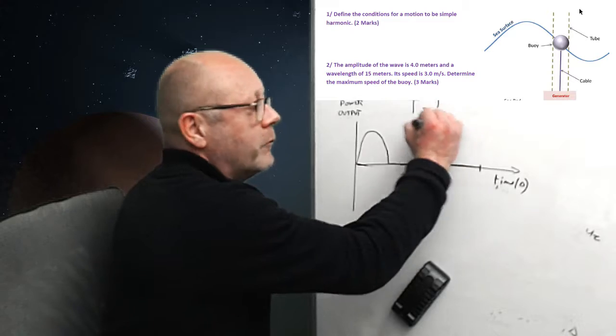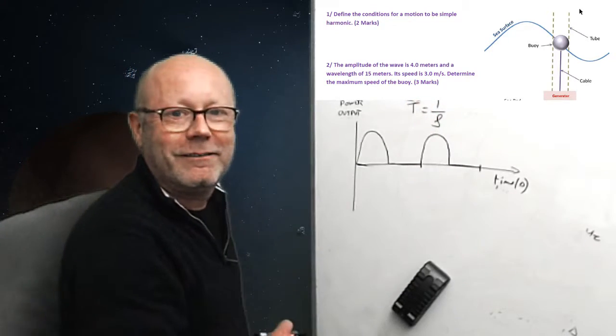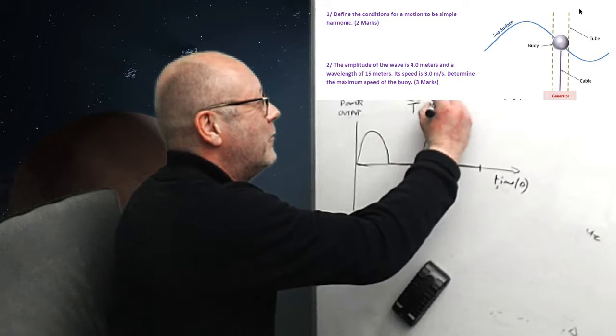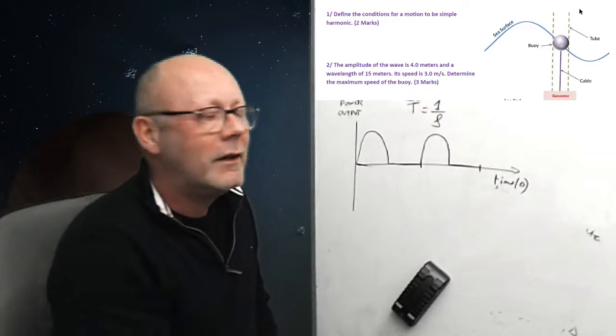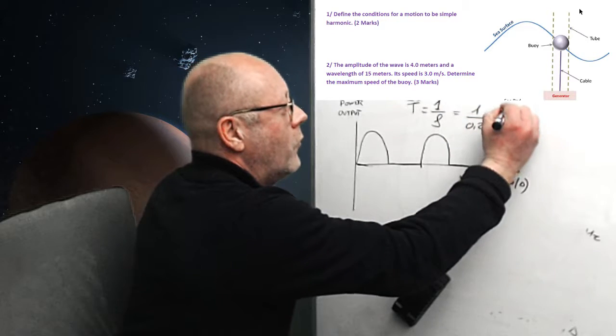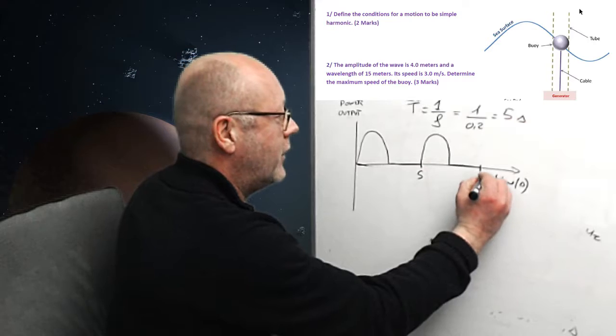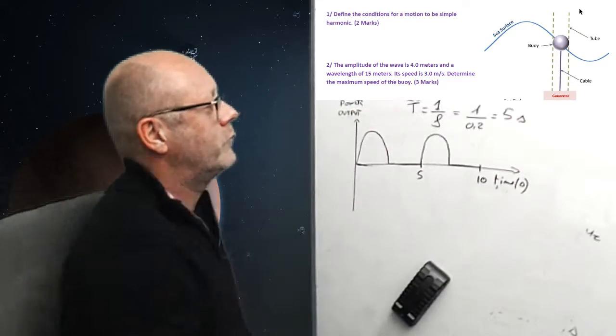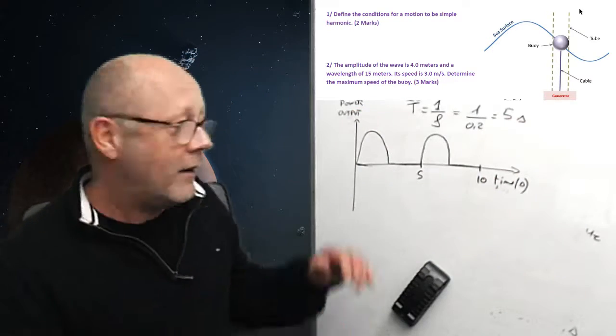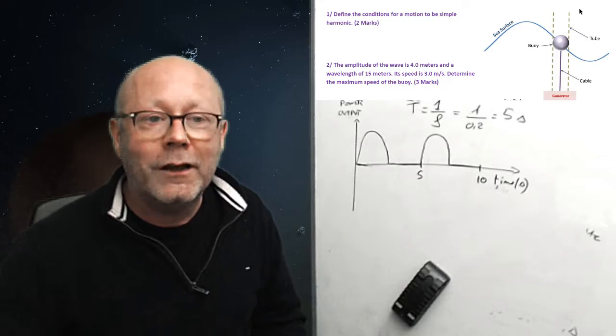One over the frequency. Which is one over 0.2. So, five seconds. So, it would be five seconds, ten seconds. That's how the power output would look like. Good. That concludes this exercise.